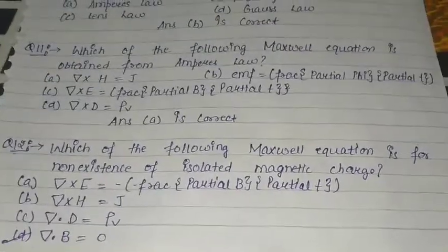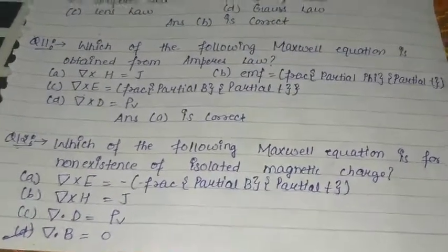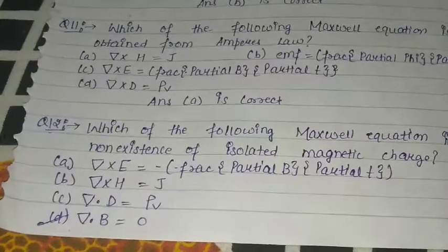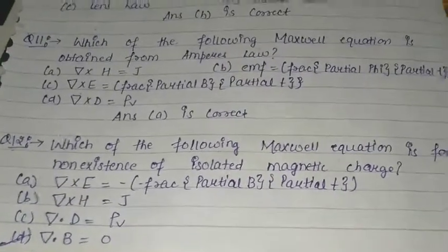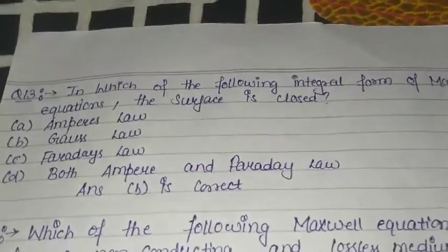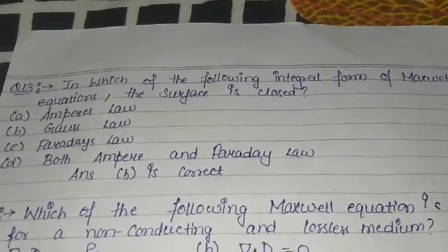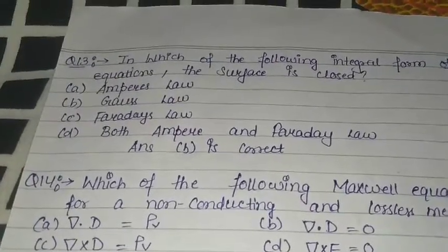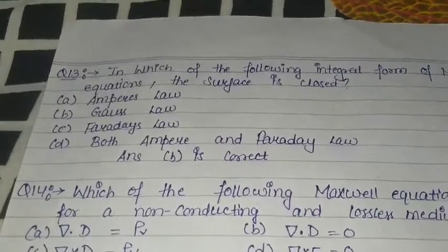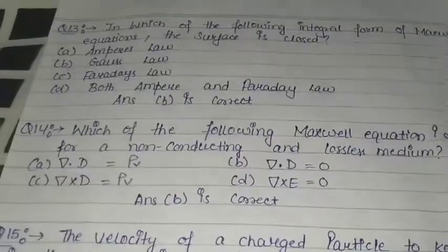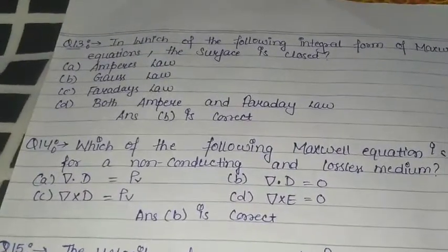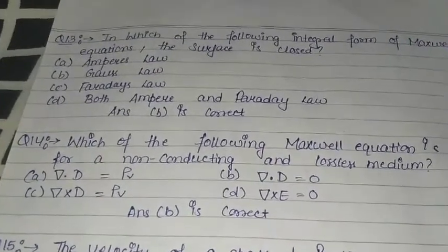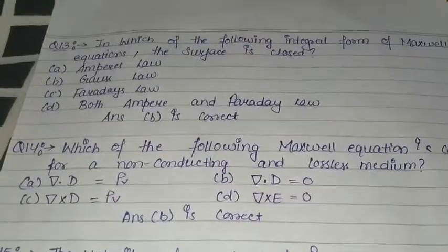Question number twelve: Which of the following Maxwell's equations is for no existence of isolated magnetic charge? From all four options, option D is the correct answer. Question number thirteen: In which of the following integral forms of Maxwell's equation is the surface closed? A. Ampere's law, B. Gauss's law, C. Faraday's law, D. Both Ampere and Faraday's law. Option B is the correct answer: Gauss's law. Question number fourteen: Which Maxwell's equation is for a non-conducting and lossless medium? Option B is the correct answer: del dot D is equal to zero.